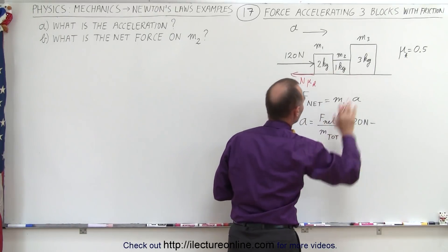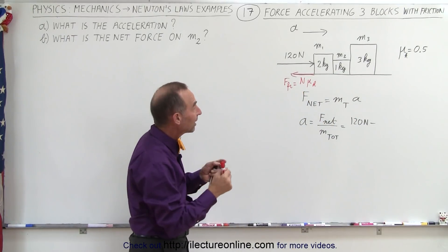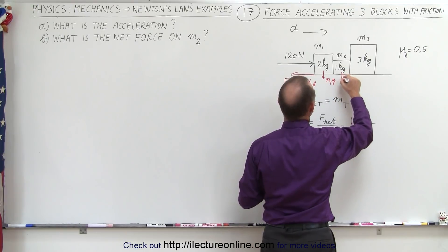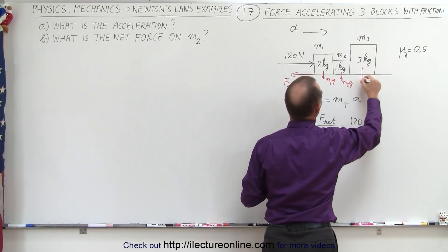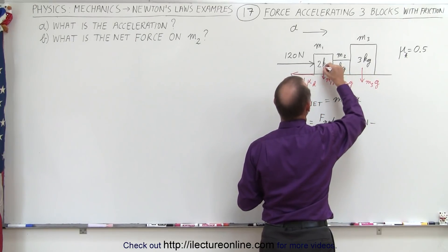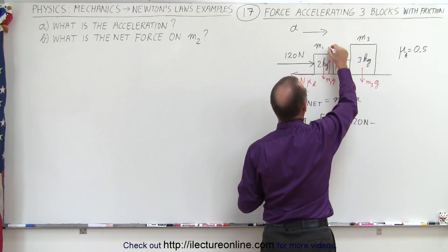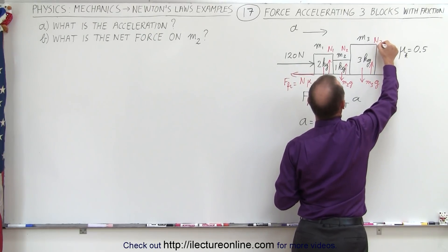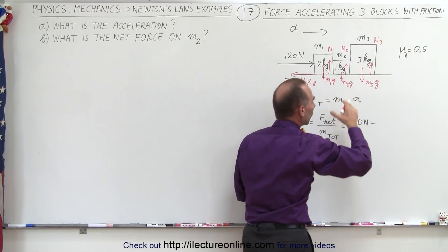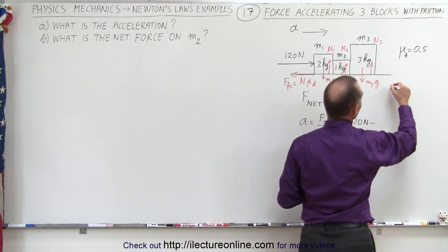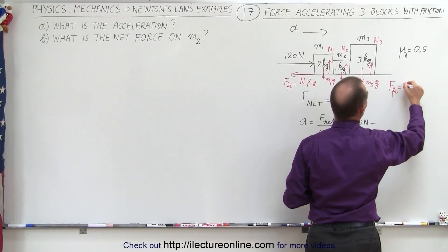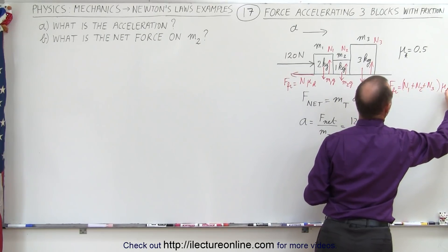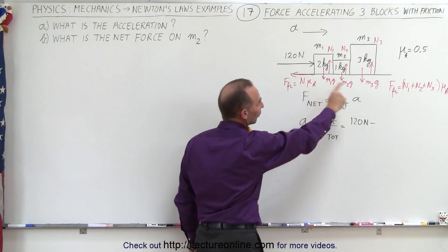The friction force equals the normal force times mu. In this case it's mu sub k because the whole system is moving. The normal force is the force pushing back, so we have M1g, M2g, and M3g, giving us normal forces N1, N2, and N3. The total normal force causing friction across the whole system is the sum of those three normal forces — that is, the weight of all three blocks combined — all times the coefficient of friction.